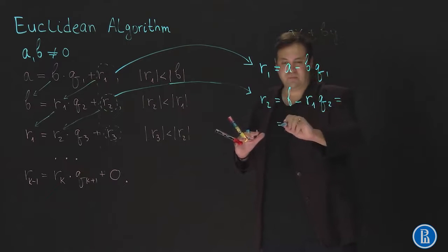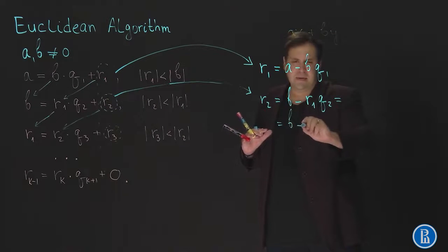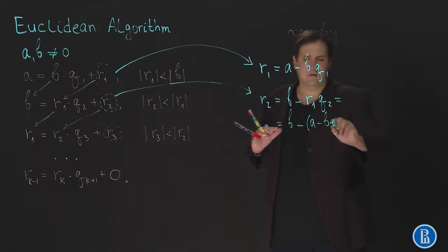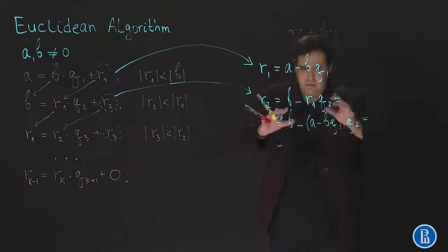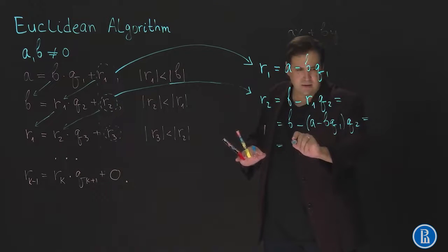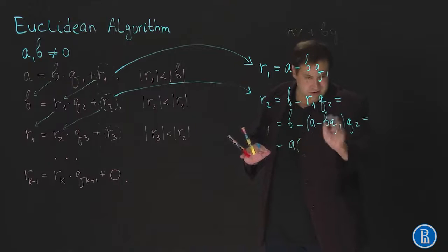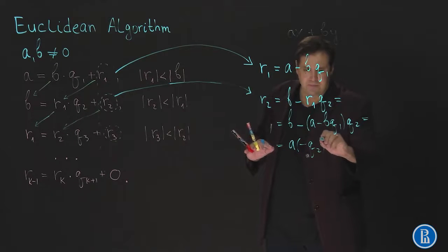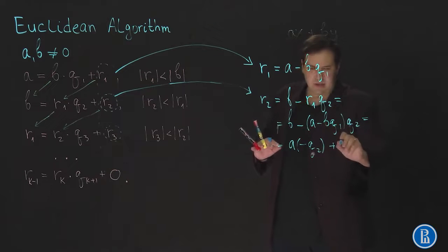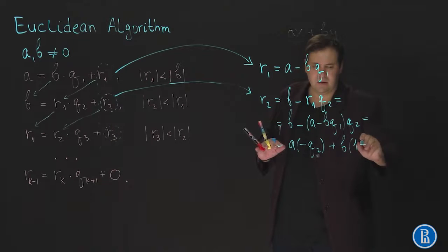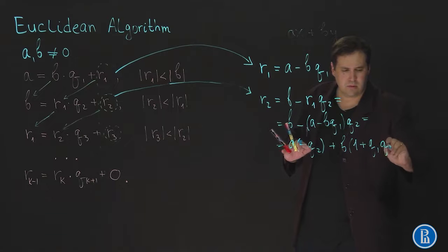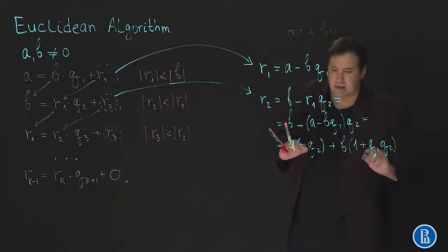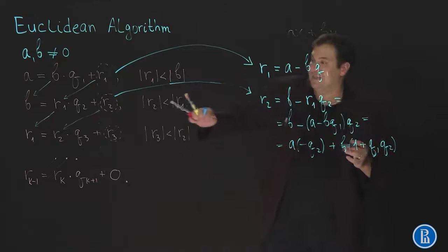So we write that R2 is equal to B minus, in parentheses A minus BQ1, multiplied by Q2. And just rearrange everything here and obtain A multiplied by minus Q2 plus B multiplied by Q1 Q2. So this is a linear representation of the second remainder.